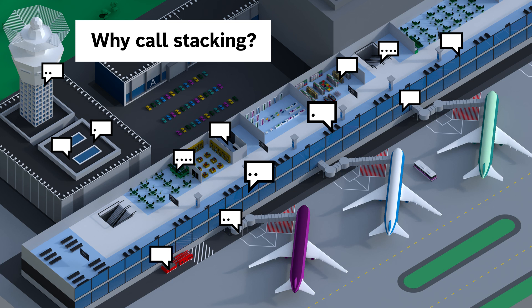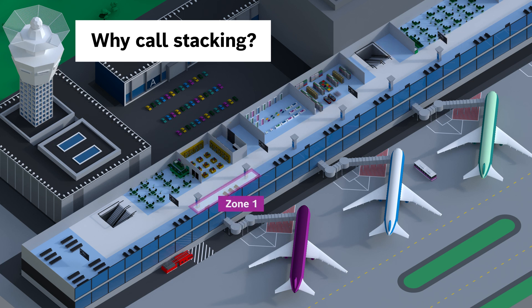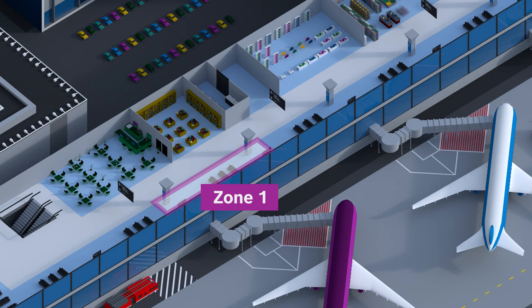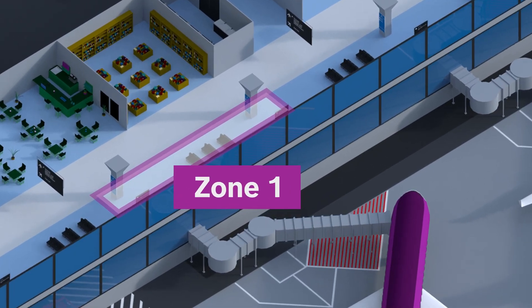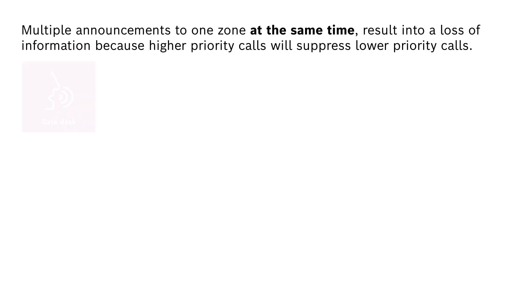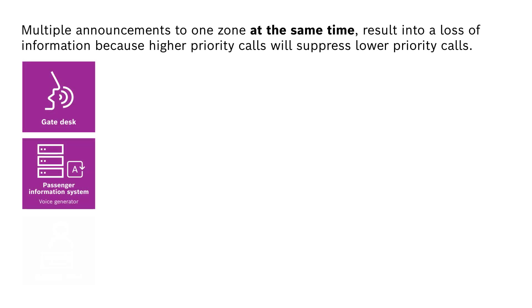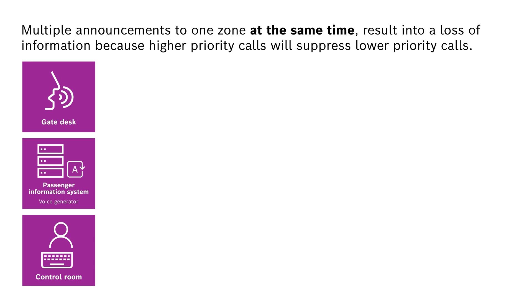In places like airports, numerous announcements are made from various locations. Let's have a closer look at one specific zone. Multiple announcements to one zone at the same time result in a loss of information, because higher priority calls will suppress lower priority calls.